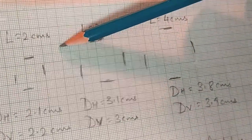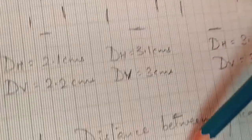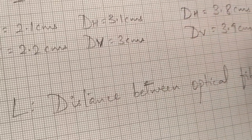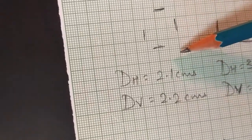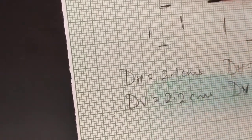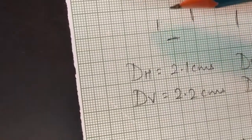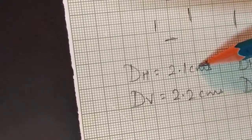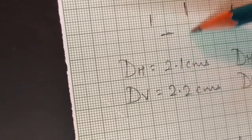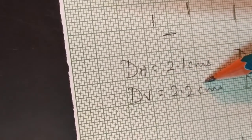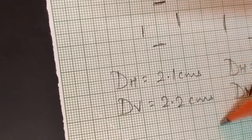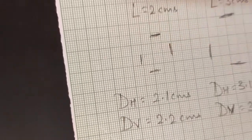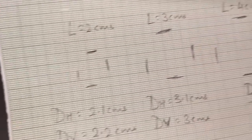Here I have marked L equals 2, 3, and 4, where L indicates the distance between the optical fiber and the screen. Using a scale I have measured the horizontal and vertical diameter. The diameter would be the same whether you measure it horizontally or vertically, but we calculate both horizontal and vertical diameters and take their average in order to get a more accurate result.